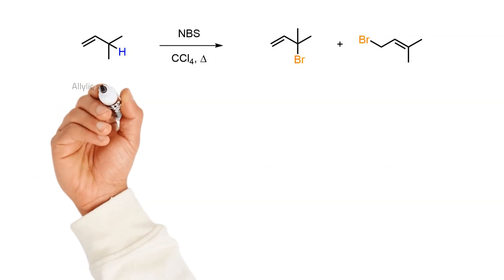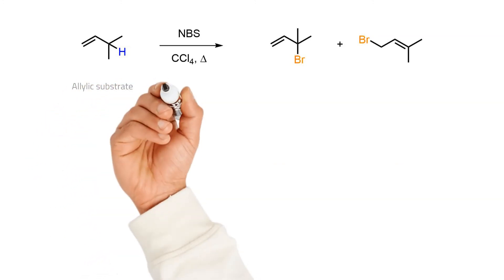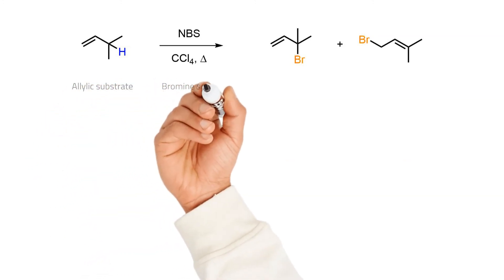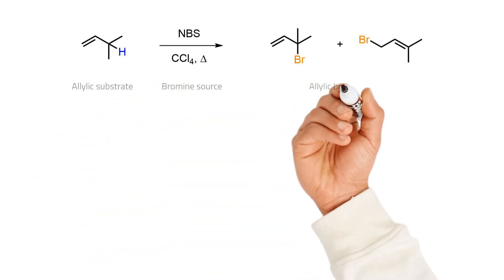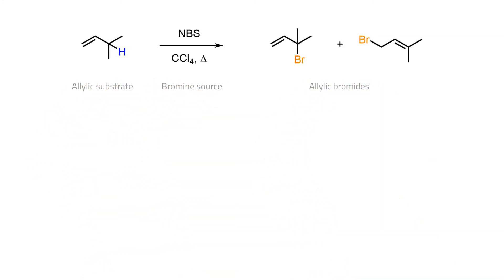Overall, the radical-based halogenation of an allylic substrate is convenient when NBS in a non-polar solvent is used as the halogen radical source. Since a resonance-stabilized allylic radical is produced during the reaction, it is possible for regio-isomeric products to be formed in the last step.